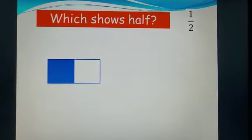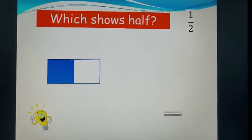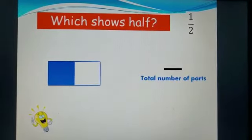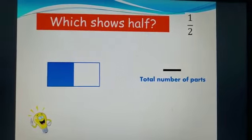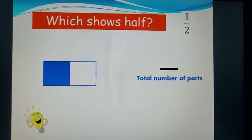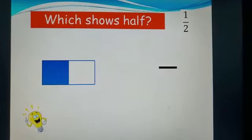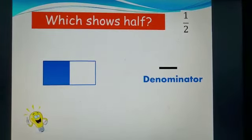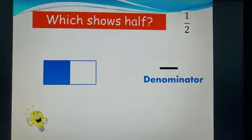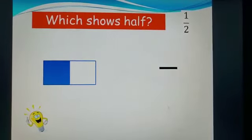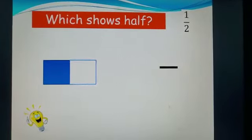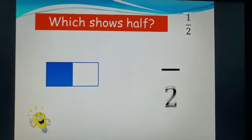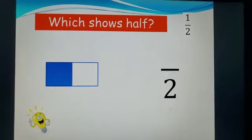Remember, our bottom number is total number of parts, or as we call it, our denominator. Let's count our number of parts. One. Two. There are two parts all together.